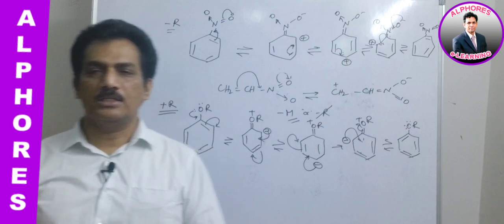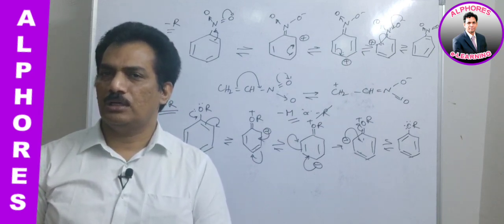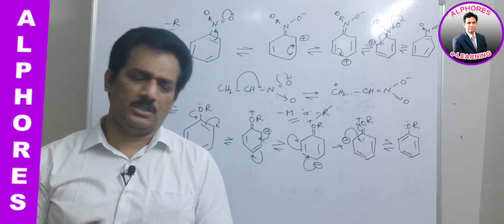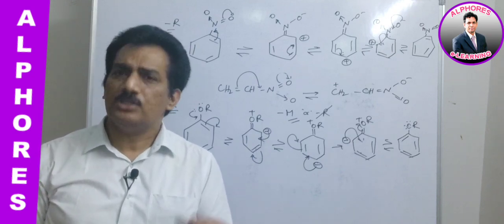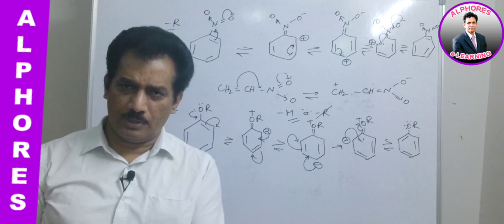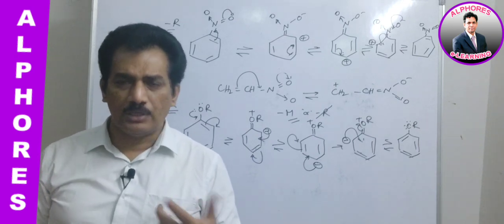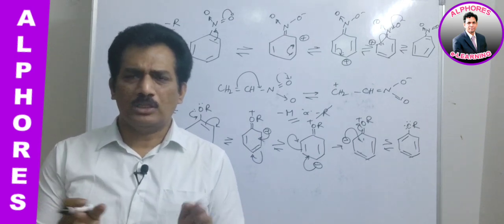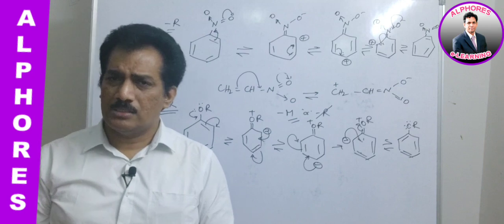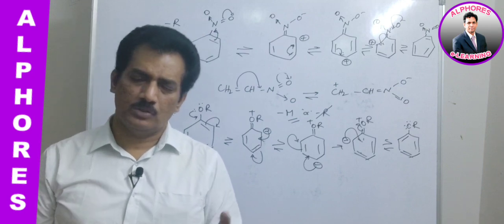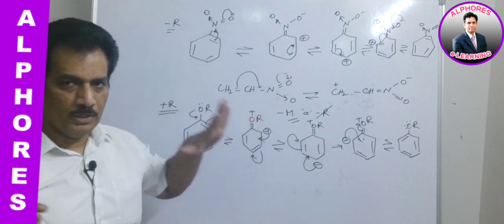In most books, mesomeric and resonance effects are considered the same because plus M and plus R both involve donating electron pairs for pi bond shifting, and minus M and minus R both involve accepting electron pairs for pi bond shift. Many books use plus R or plus M, minus R or minus M interchangeably. For our convenience, we will maintain the distinction, but you need not worry about this difference in general usage.